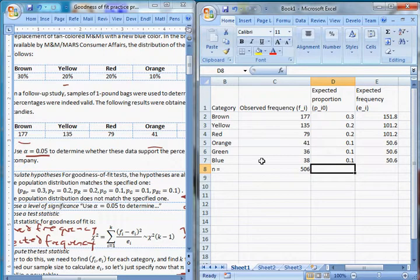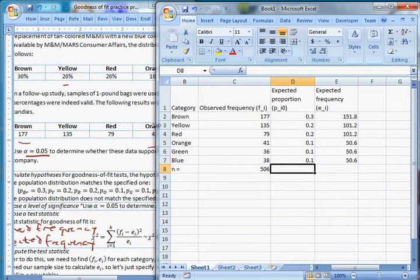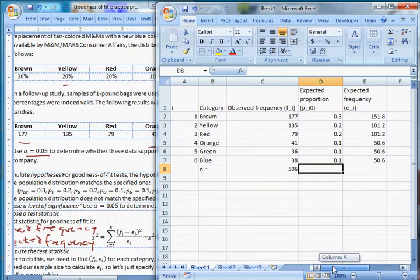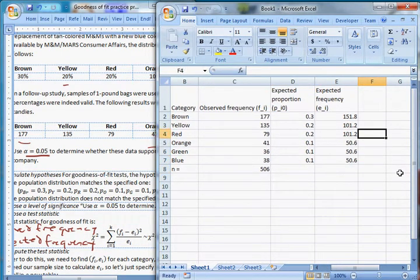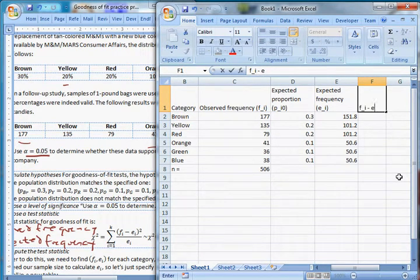So that's how I get my expected frequency. Now what I have is I have an observed frequency and an expected frequency for each category. If you look over at our test statistic, you can see that what I need to do now is I need to come up with a difference, f sub i minus e sub i. That's our deviation. So we'll calculate that here.